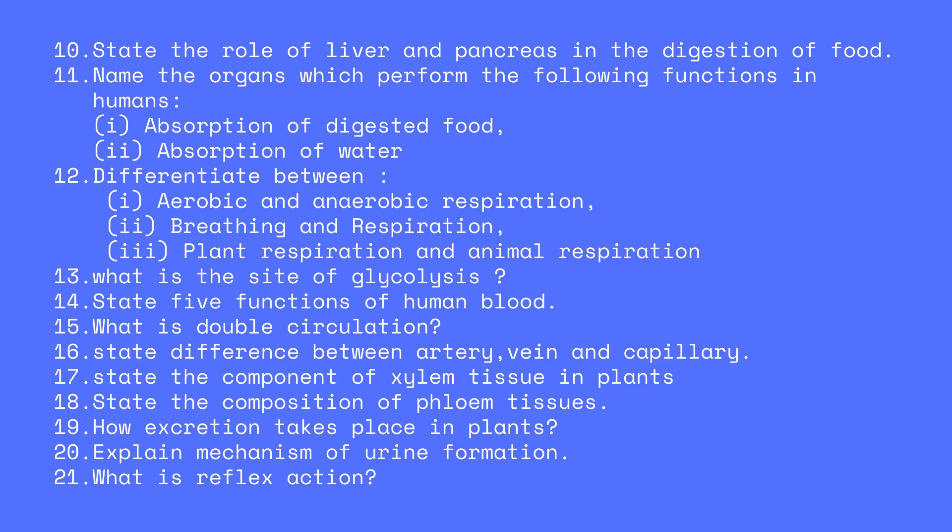What is double circulation? State the differences between artery, vein, and capillaries. State the composition of xylem tissue in plants. State the composition of phloem tissue with examples. How does excretion take place in plants? Explain the mechanism of urine formation.